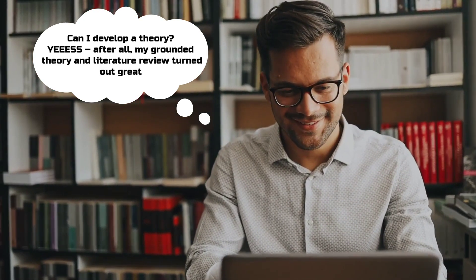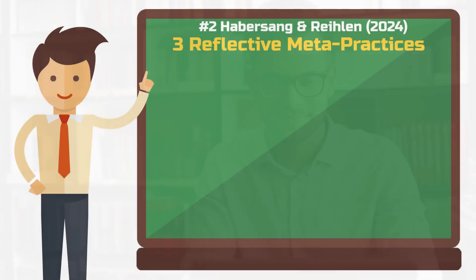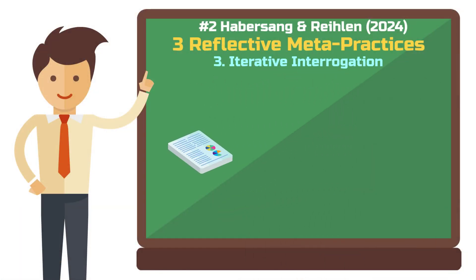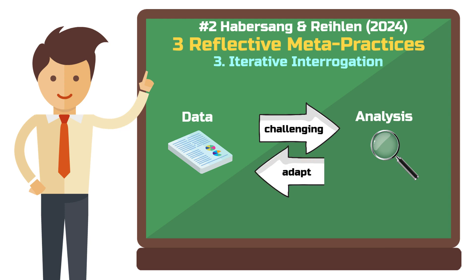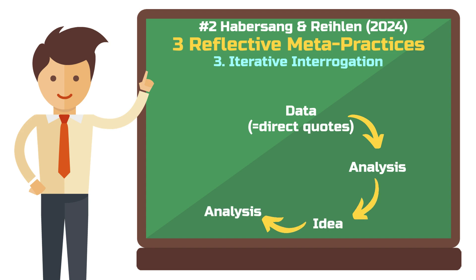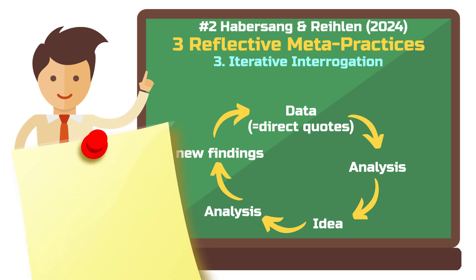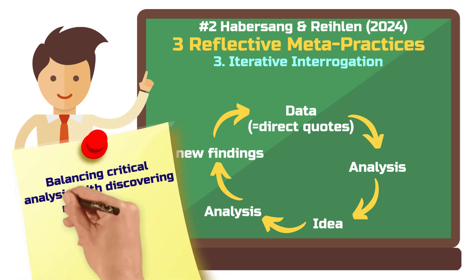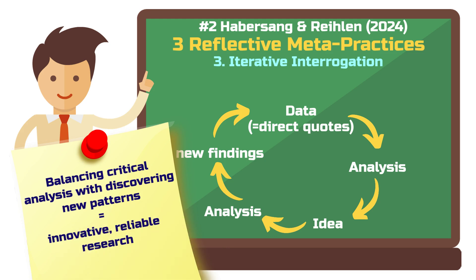Iterative interrogation means revisiting your data repeatedly throughout the analysis to question and refine your assumptions. This process involves continuously challenging your interpretations and adapting them based on new patterns or insights that emerge. Your data consists of direct quotes and findings from the qualitative studies you're analyzing. While you might begin with a specific idea, the iterative process ensures your conclusions evolve as you uncover new evidence. This constant interplay between critical questioning and discovery helps ensure your research is both innovative and grounded in clear, reproducible results.